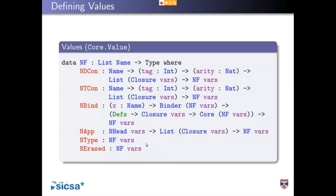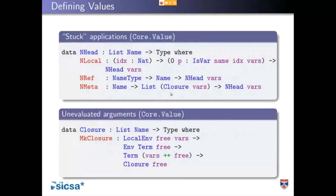The thing at the head of a stuck application is still applied to some as-yet-unevaluated arguments. It's either going to be a reference to a local variable — using the isvar structure you'll be familiar with from the lecture two exercises — or a global reference, or a meta variable. We'll see what happens with meta variables shortly.